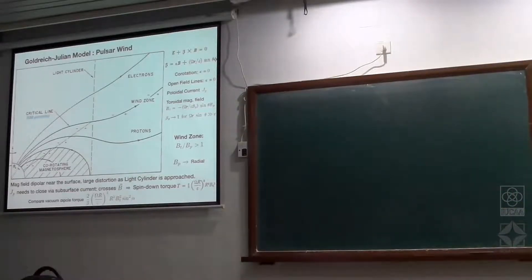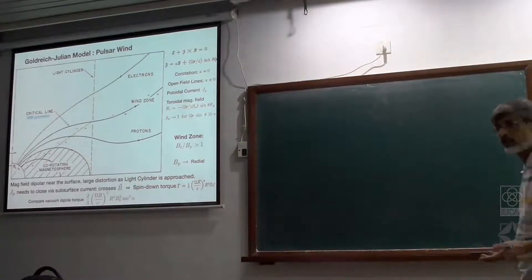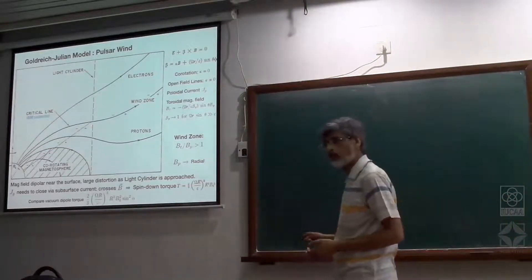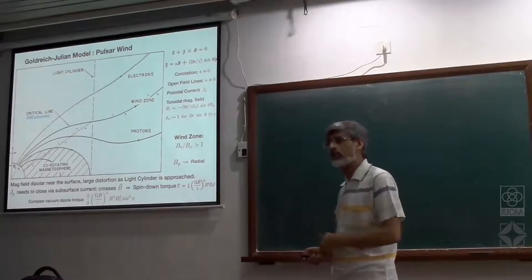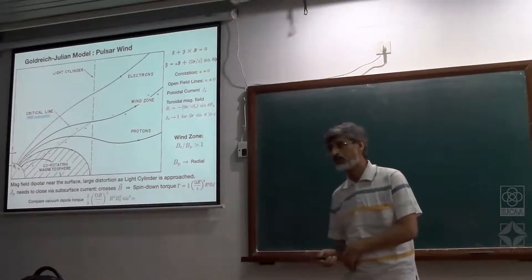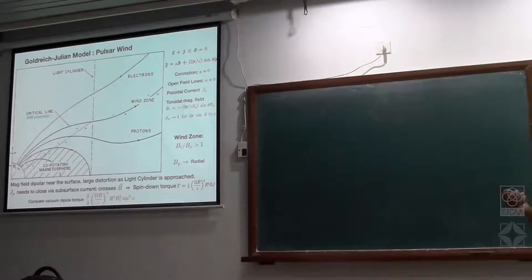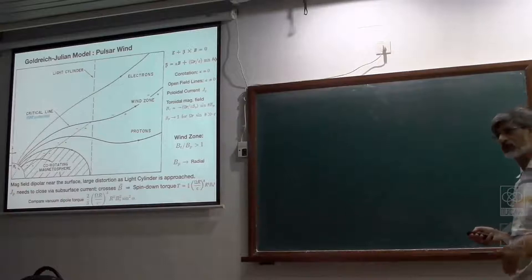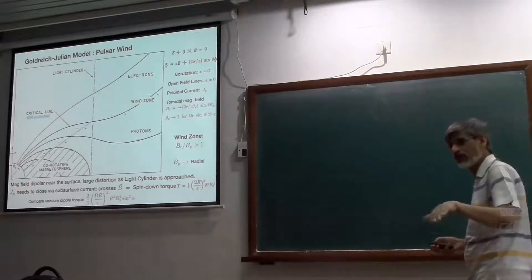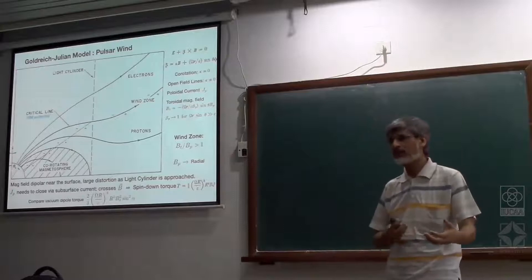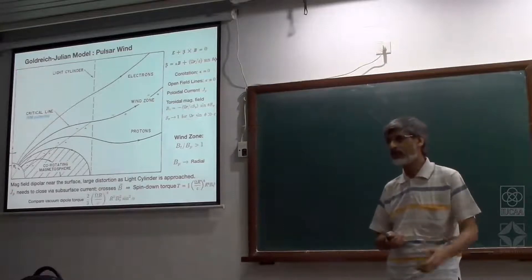In reality, you have electrons and positrons, not protons. So both components of the plasma are going out. If you don't compensate for the loss of charge by the motion of charges on the surface, then you will get additional charge building up.